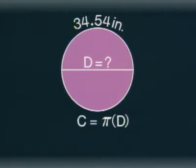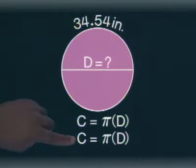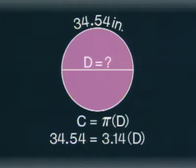You use this equation. Below, you replace C with what it equals, 34.54. That equals 3.14 times D.